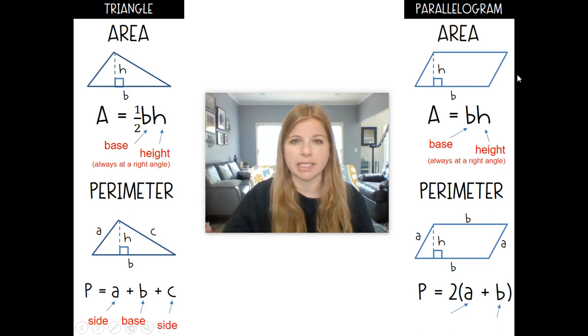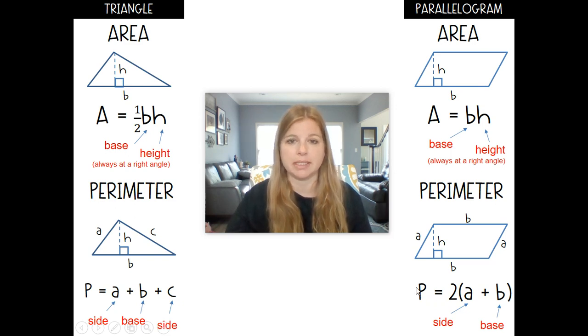Notice I don't care about, like, the slanted sides. However, for the perimeter, I wouldn't care about the height the same way as before. Maybe I needed, though, to find a certain side length. I would simply add up my two different sides and then multiply it by two. I mean, I could do a plus b plus a plus b, but two times a plus b is the same thing. So two times the side, and then two times the bases.